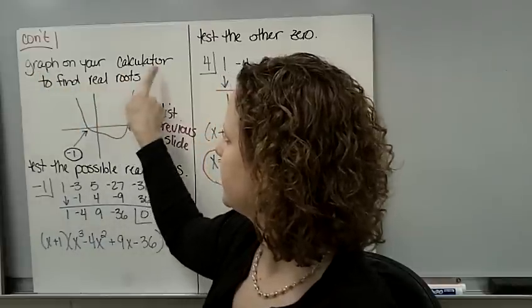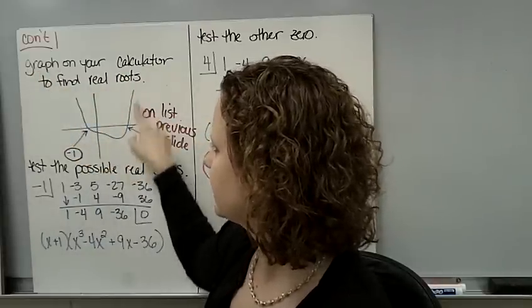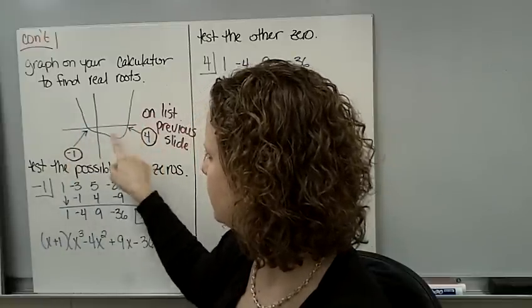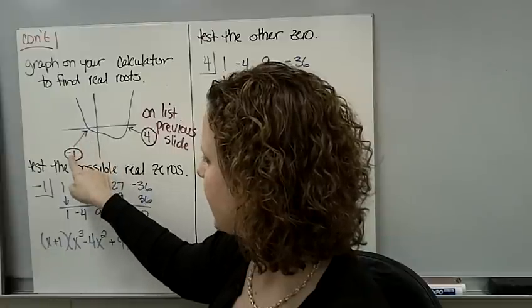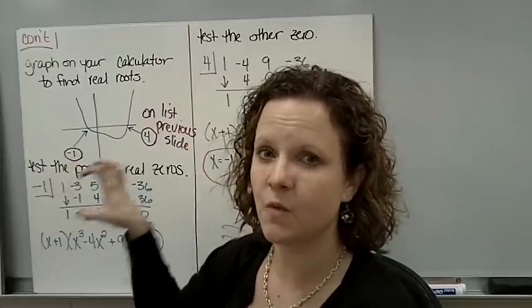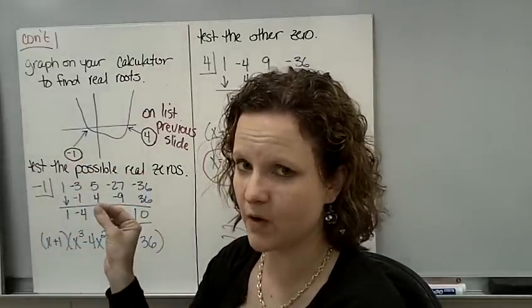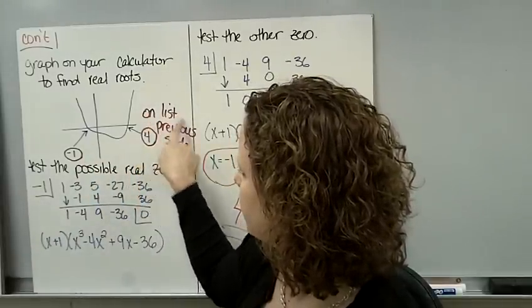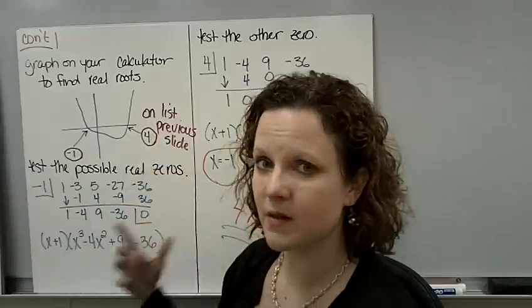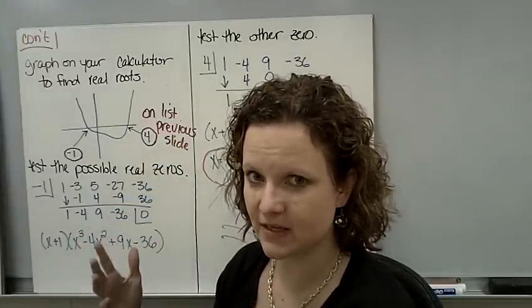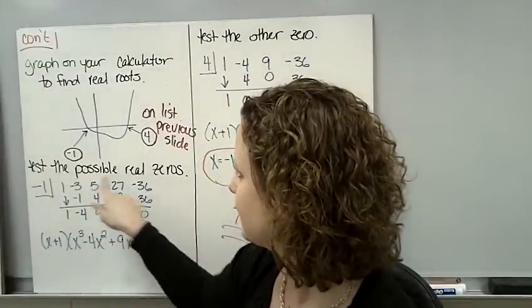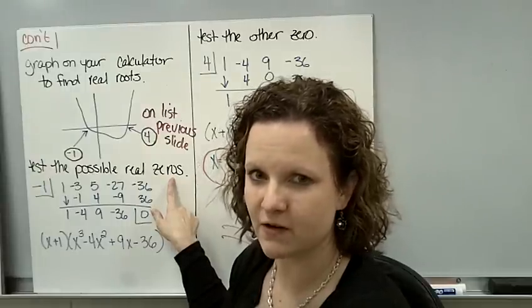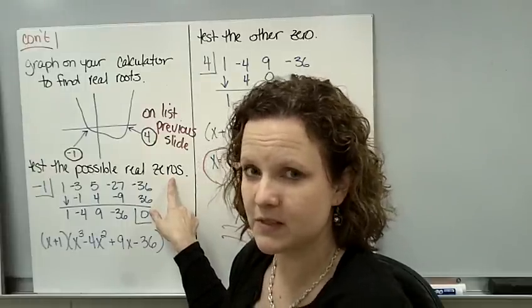Continue. Please graph this on your calculator to find the real roots. I've sketched the graph very basically here, and I've traced this polynomial to try to find where I get the x-intercepts. So you can go to your table and look for y = 0, or you can just trace your polynomial and find -1 and 4. And if you look on that previous slide, 1 and 4 were two of the possible roots that we listed, the p over q. So test the possible real zeros. That means that if you do synthetic division, you're going to get a remainder of 0, and it will be a root. So we're testing it.